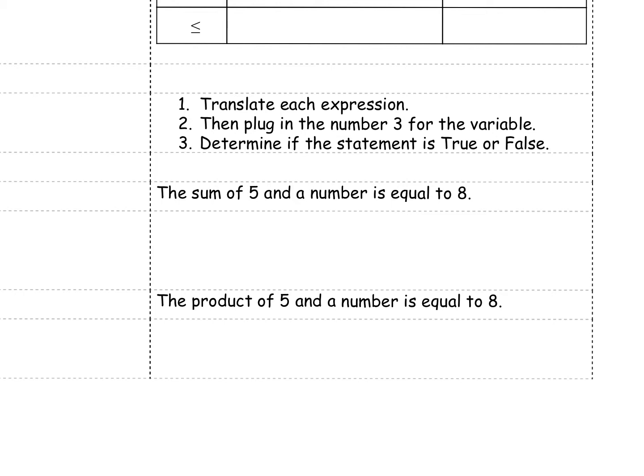We have multiple examples and we have a three step process we need to do. First we want to translate each expression. Then we are going to each time plug in the number 3 for our variable and determine if it's true or false. So our first expression says the sum, sum is one of those operation words, of 5 and a number is equal to 8.